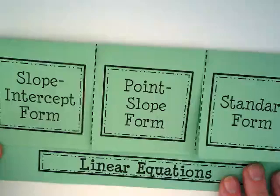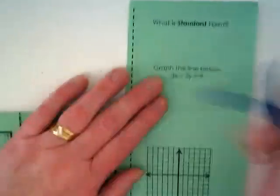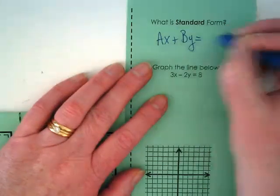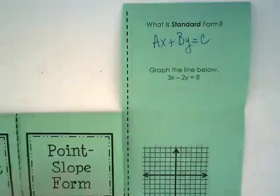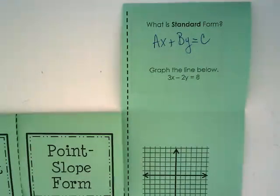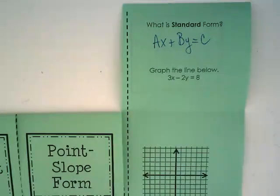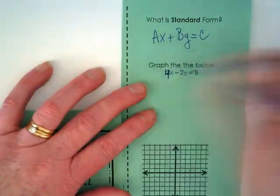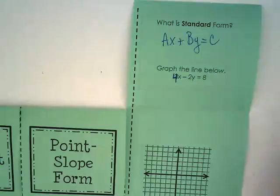Then we have standard form. What is standard form? Ax plus by equals c. To make this easier with this example, let's change this 3x to a 4x. We're going to make this equation 4x minus 2y equals 8.